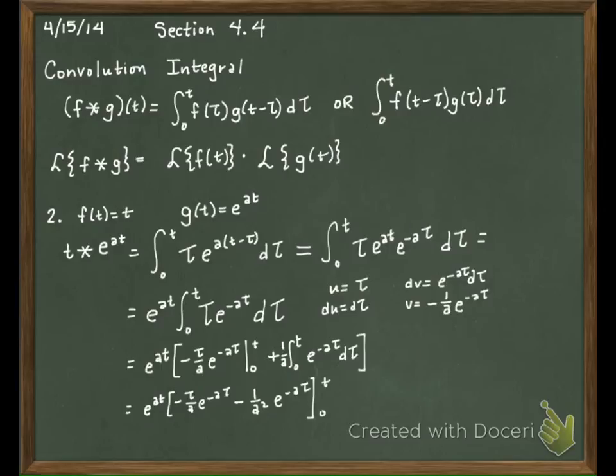All right, let's put in our limits. Negative one over A squared E to the negative AT, and then when we put in our lower limit of zero, what's going to happen to that tau over A?